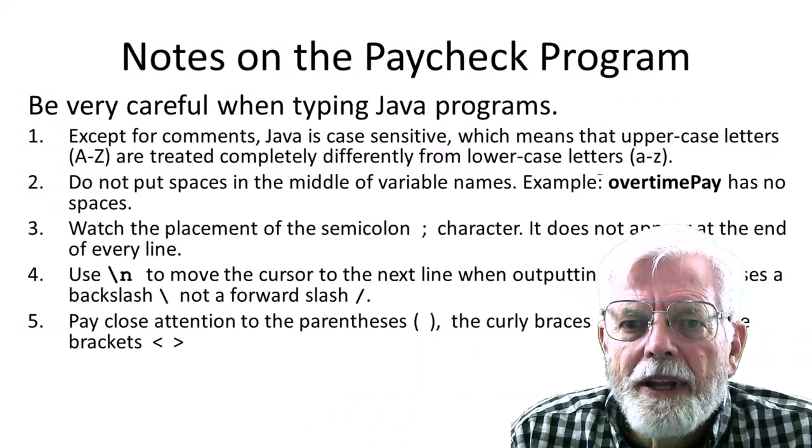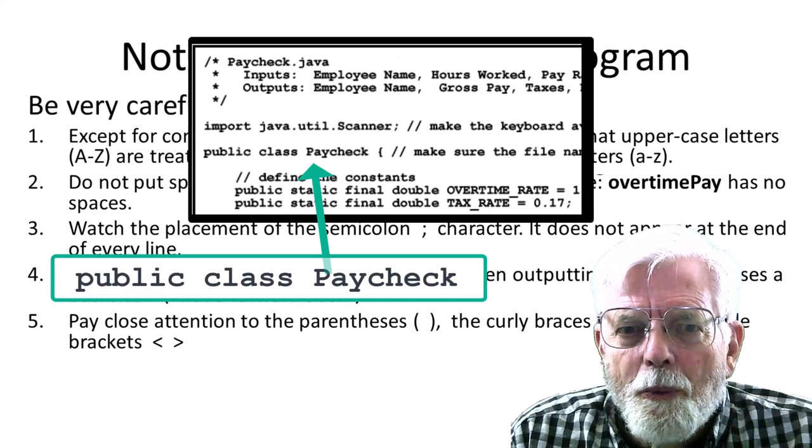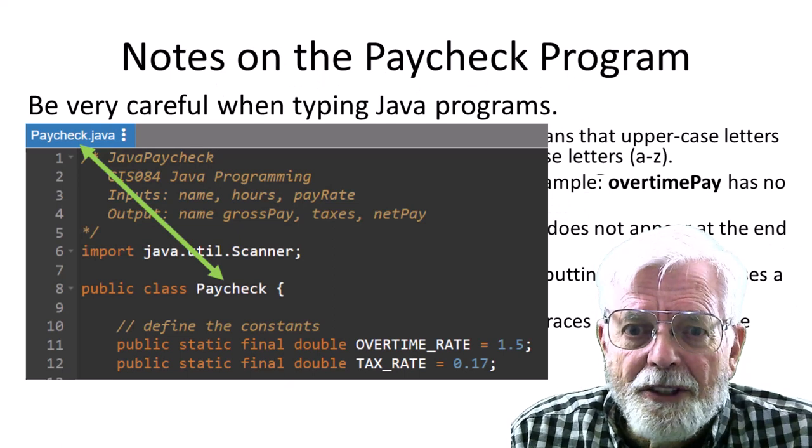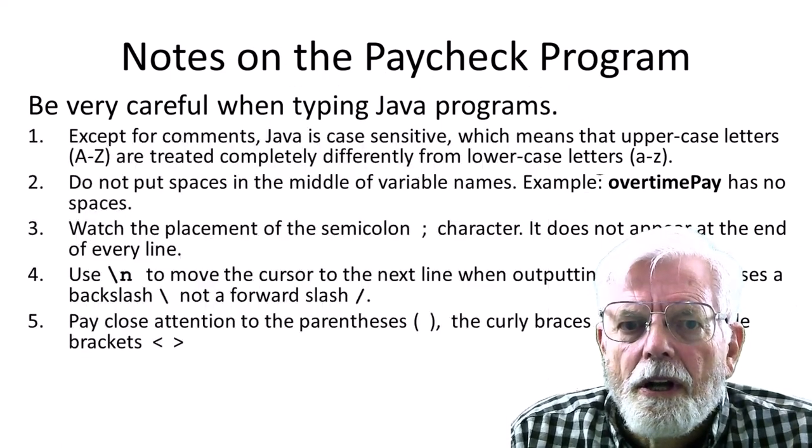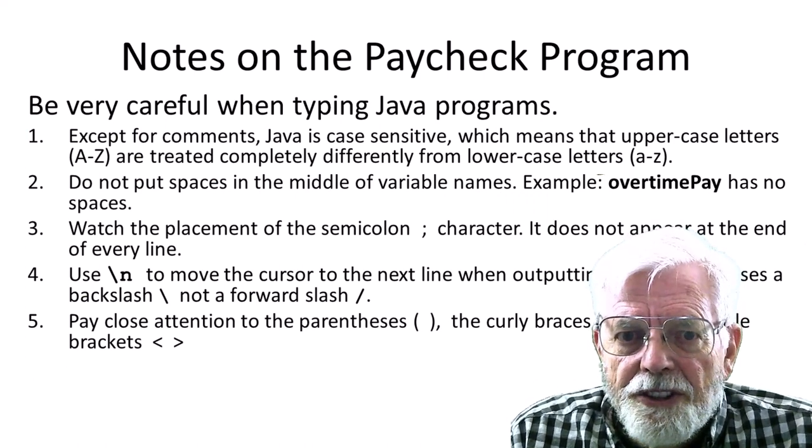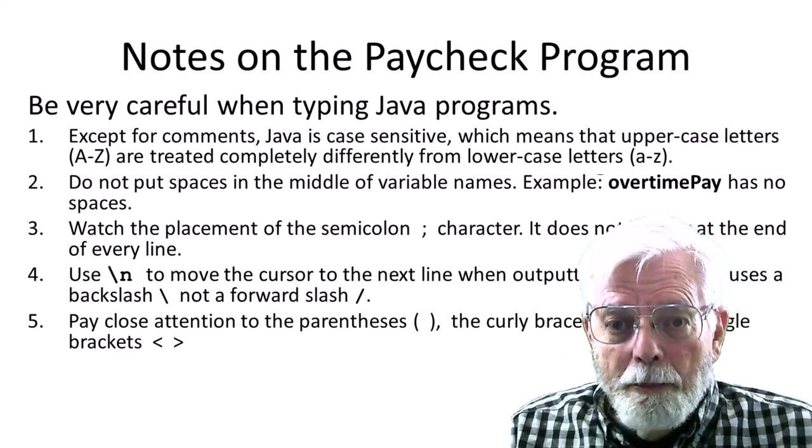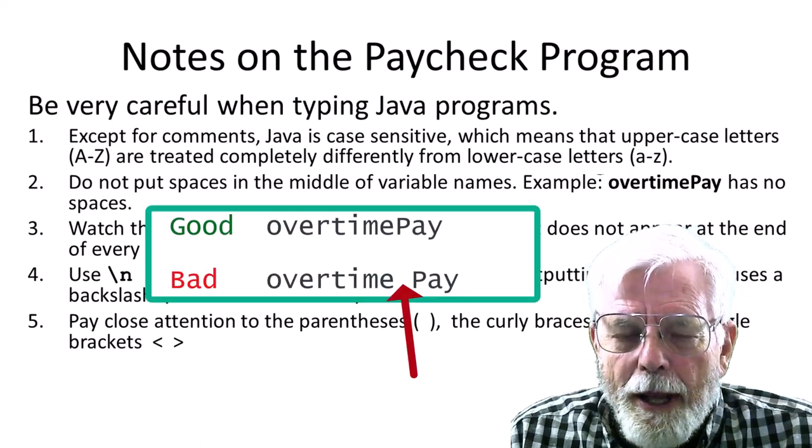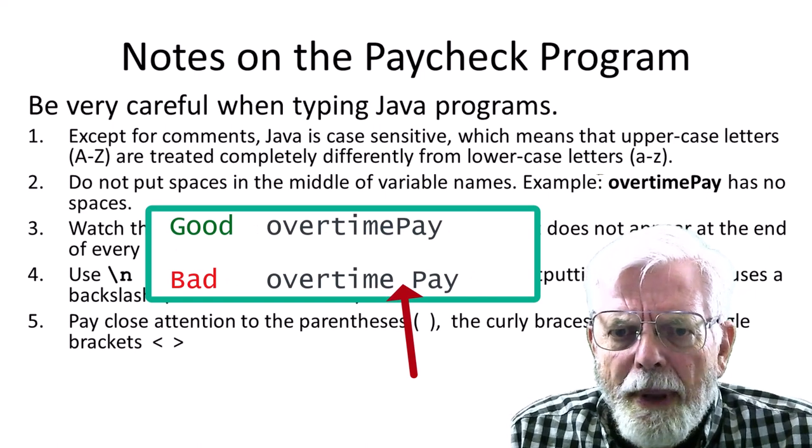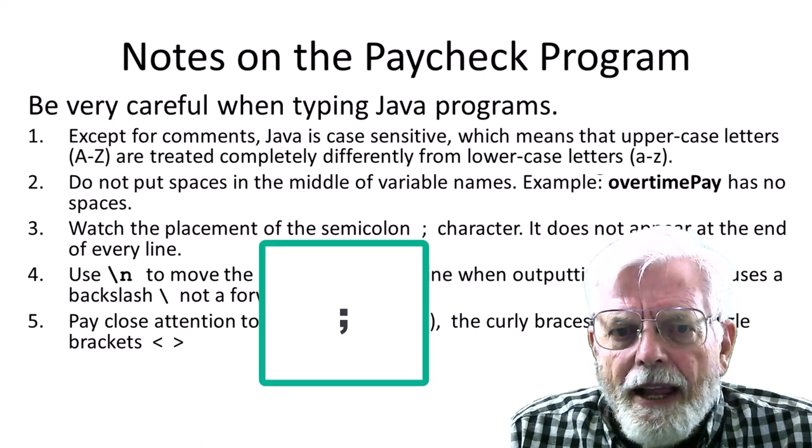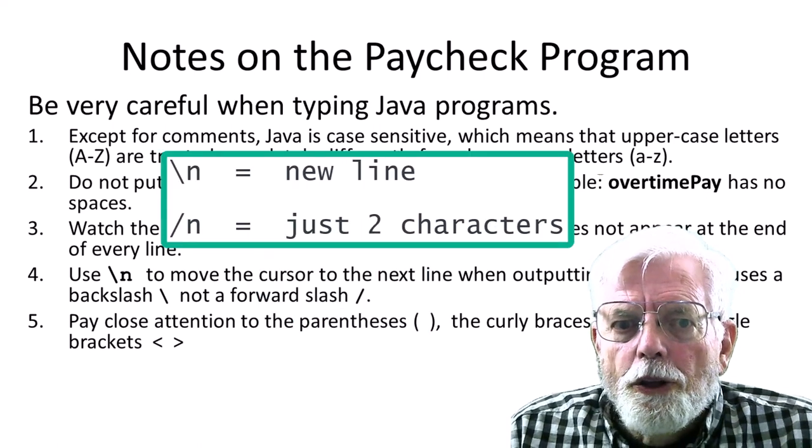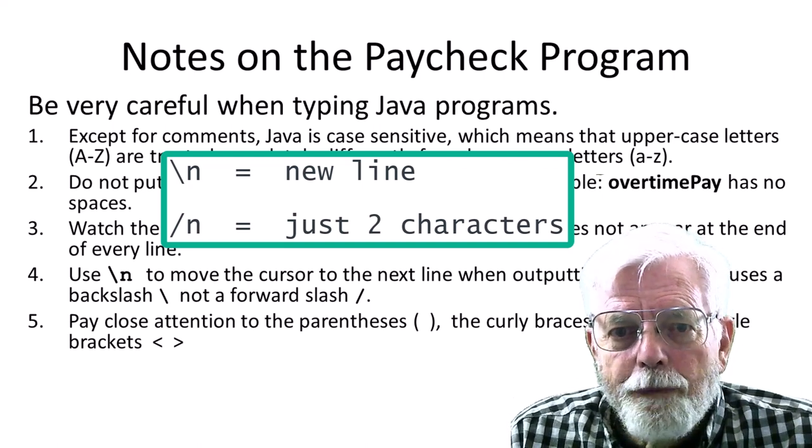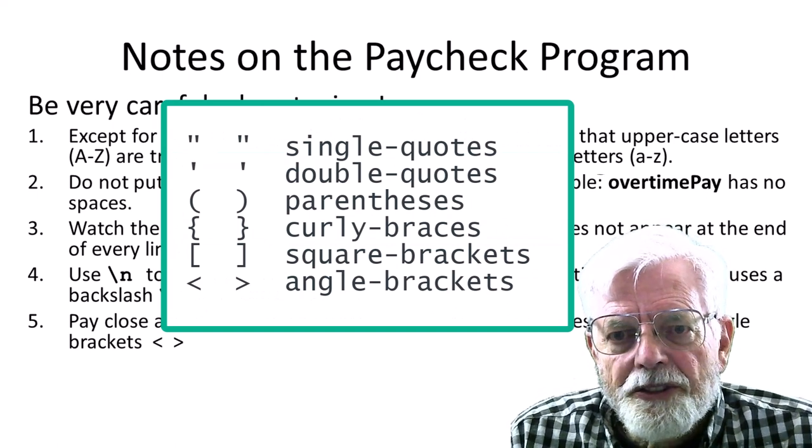Be very careful when typing in a Java program. A name for a Java class should start with a capital letter, for example, CLASS PAYCHECK. The name of the disk file for the program should have the same name as the class name but with a .java file extension. Except for comments, Java is case sensitive, which means that uppercase letters A through Z are treated completely different from the lowercase letters, small a through small z. Do not put spaces in the middle of variable names. Example, overtime PAY has no spaces. Watch the placement of the semicolon character. It does not appear at the end of every line. Use backslash n to move the cursor to the next line when outputting text. The backslash n uses backslash, not a forward slash. Pay close attention to the parentheses, the curly braces, and the angle brackets.